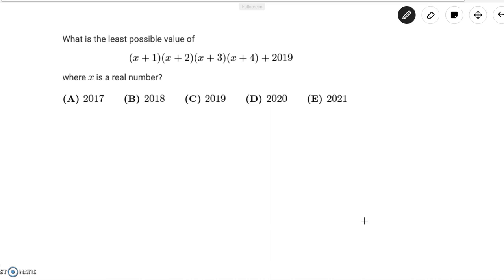Hello everyone and welcome to On the Squat STEM. Today we'll be covering 2019 AMC 10a number 19. The problem reads: what is the least possible value of (x+1)(x+2)(x+3)(x+4) + 2019 where x is a real number?